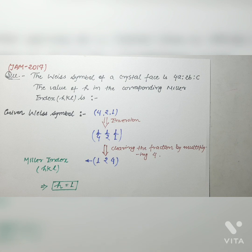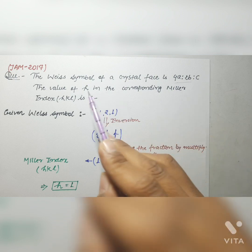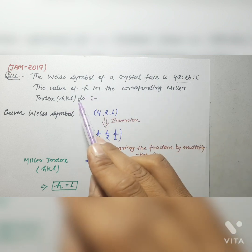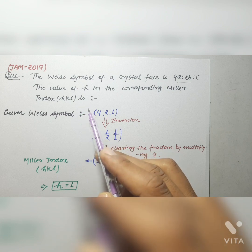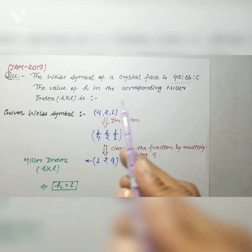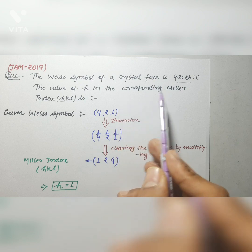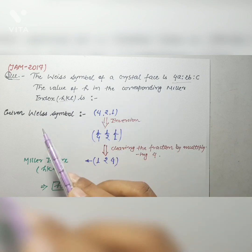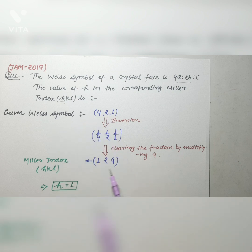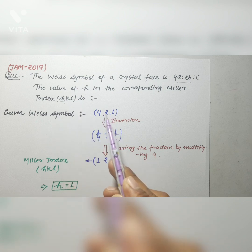The next question is taken from JAM 2017 and is somewhat similar to the previous question. The question says the Weiss symbol of a crystal face is 4a, 2b, 1c, and the value of h in the corresponding Miller index (hkl) is to be found. You have to calculate the Miller index for the given Weiss symbol and then identify the value of h. The given Weiss symbol is 4, 2, 1.